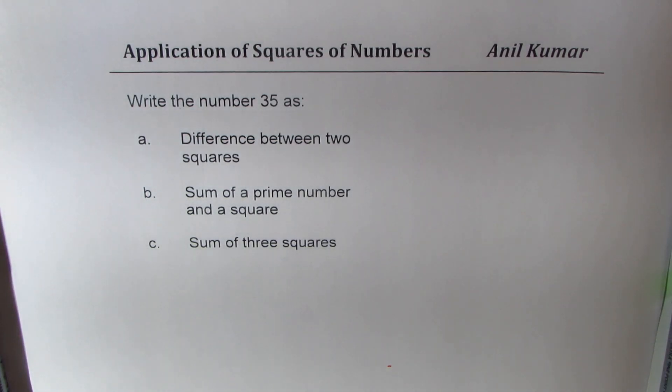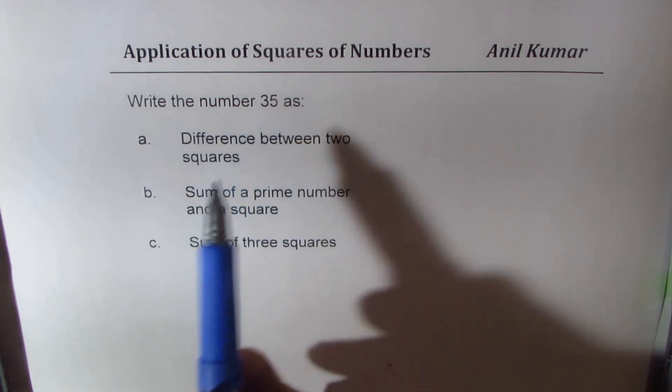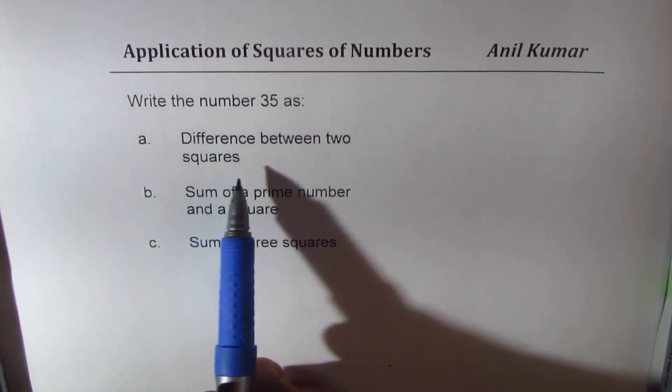I'm Anil Kumar, sharing with you a very interesting example on squares of numbers. Write the number 35 as difference between two squares.